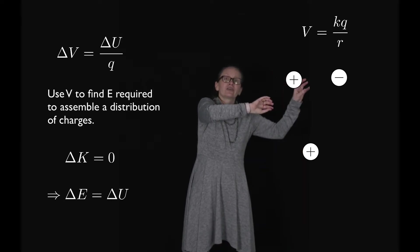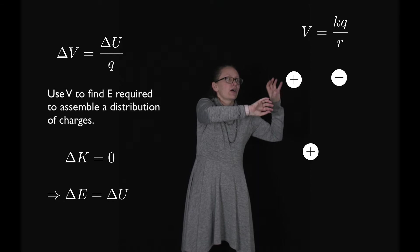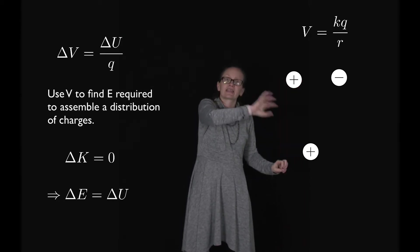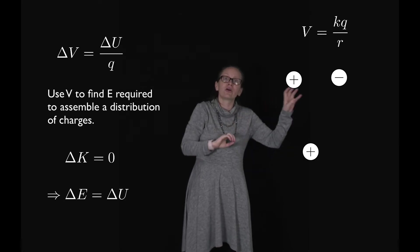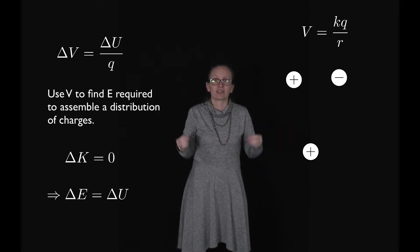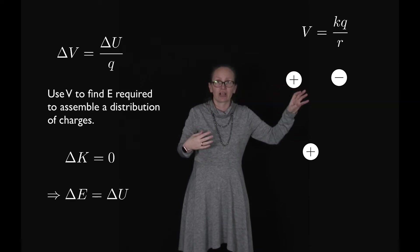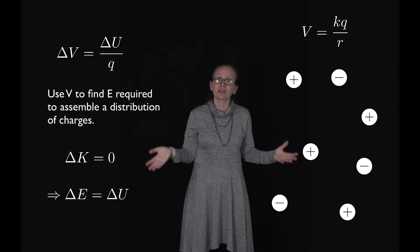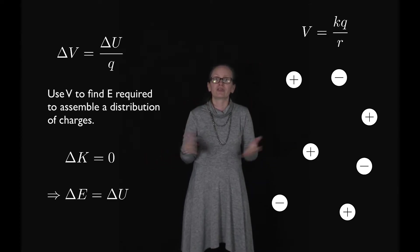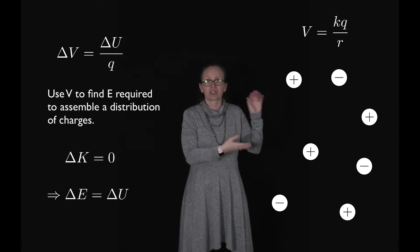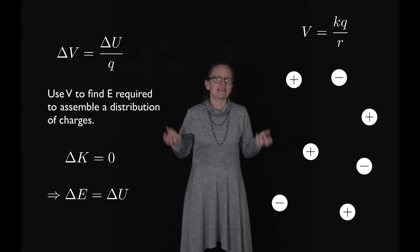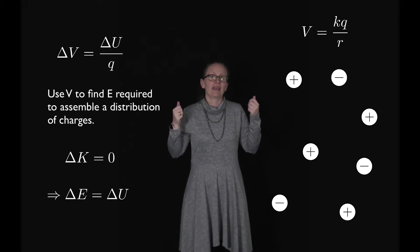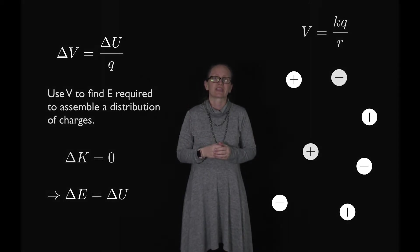If we add a third charge, we can work out the voltage at the point it's added to from both the first charge and the second charge, and from those we can work out the change in potential energy needed to add that third charge. We can keep going until we've built up our entire charge distribution. When we sum all those contributions, we'll have the total energy it took to assemble this charge distribution. This is probably easiest to see with a worked example, so let's have a look at one now.